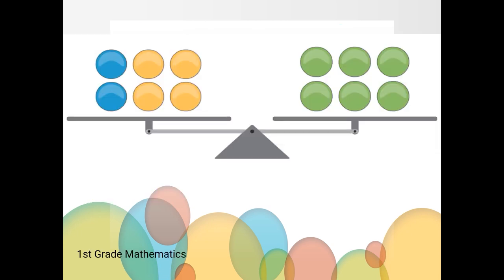Now, let's look at this picture of a scale. Is the balance equal? Yes, how do we know that the balance is equal? We know the balance is equal because it shows the same number of counters on each side.